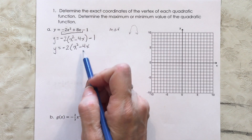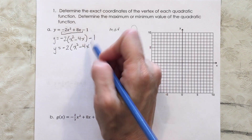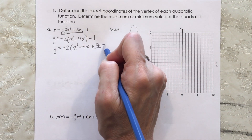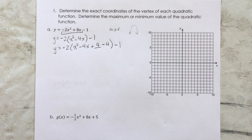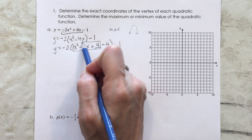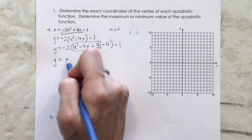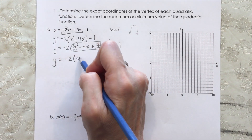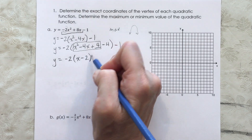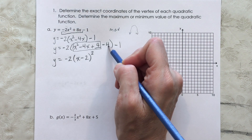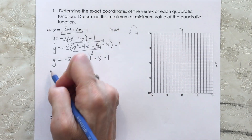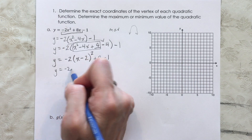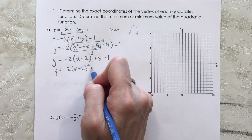Now we complete the square inside the parentheses. We've got that number 4 again — half of 4 is 2, 2 squared is 4. So we add 4 to complete the square, but we also subtract 4 so we're really just adding 0. The first three terms inside the parentheses form the perfect square trinomial, which factors to (x - 2)². Then we have to get the -4 out of the parentheses by multiplying it by the step number: -2 × -4 = +8, minus 1.